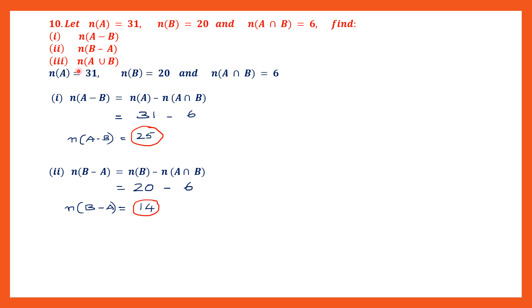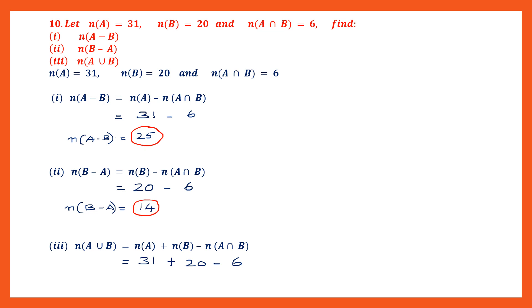The next question: we have to find the cardinal number of A union B. Using the formula: cardinal number of A plus cardinal number of B minus cardinal number of A intersection B. Substituting: 31 plus 20 is 51, minus 6. Borrowing: 11 minus 6 is 5 and 4 — giving us 45. We have found the cardinal number of A union B, and that is 45.